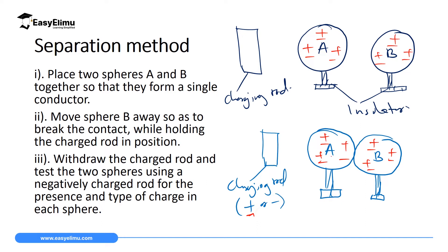If the rod is positively charged, it will attract opposite charges — the electrons — to ball A, and repel protons to ball B. After electrons have been attracted to ball A, ball B will acquire the positive charges that were repelled. Then you first separate ball B so it goes with the positive charges, and next you remove the charging rod, leaving ball A with the negative charges. If the charging rod is negatively charged, it attracts positives to ball A and repels negatives to ball B. You separate ball B first — it carries the negative charges — then remove the charging rod, leaving ball A with positive charges.